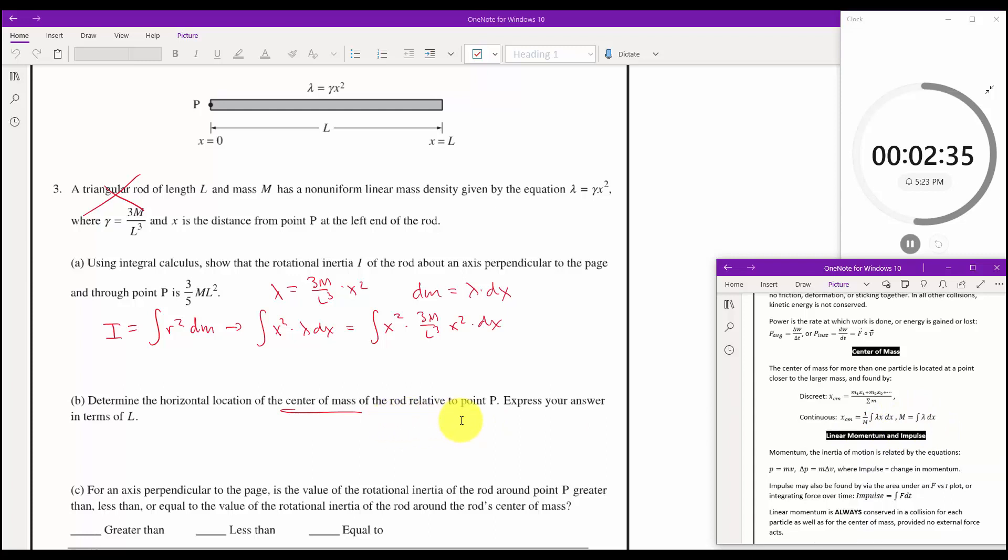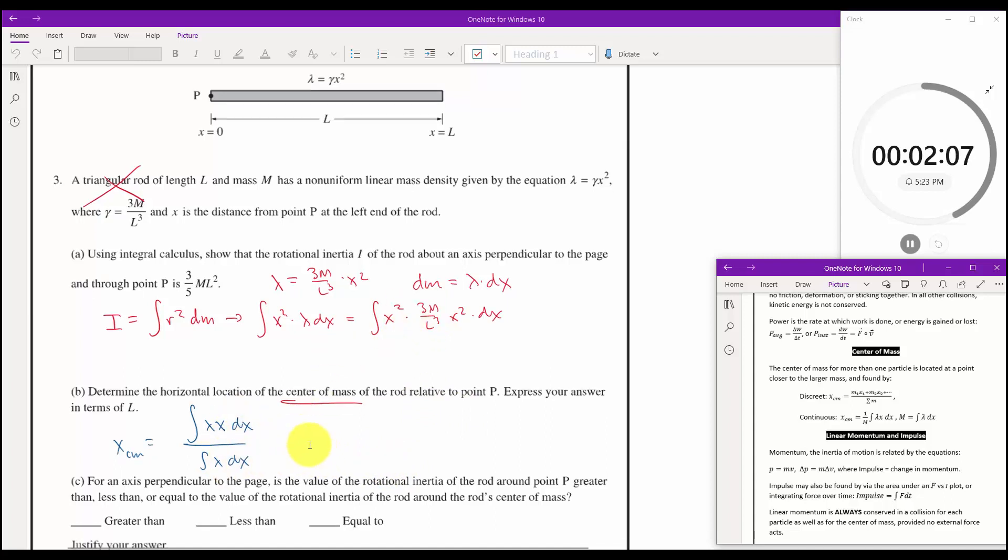So center of mass, we have the equation is 1 over mass integral lambda DX or lambda XDX. And the M can be integral of lambda DX. So those equations are at least partially on our formula sheet. But if we want to know the position of the center of mass, we would have, it's the integral of lambda XDX all over the integral of lambda DX. And we would then put stuff into that to actually simplify and solve it.